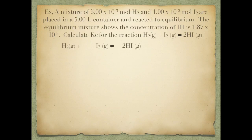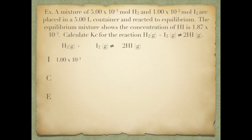Because I'm not given a concentration of hydroiodic acid, I'm going to assume I don't have any. I'm going to create what's called an ICE chart. An ICE chart is used when you're not at equilibrium and you need to see the changes that must be made in order to reach equilibrium. I stands for Initial, so my initial concentration of H₂ is 1.00 times 10 to the negative third, iodine is 2.00 times 10 to the negative third, and hydroiodic acid is zero.